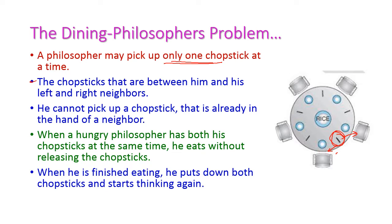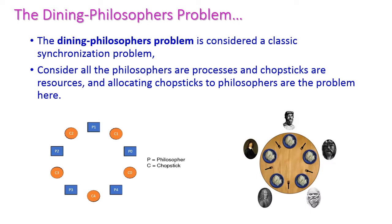When the philosopher is hungry and has picked up both chopsticks, he starts eating until he is finished. Once he finishes, he puts down both chopsticks and starts thinking again. This is the classic synchronization problem. Consider all the philosophers as processors and chopsticks as resources.